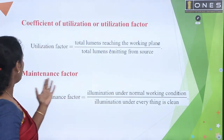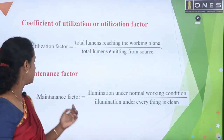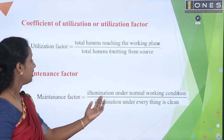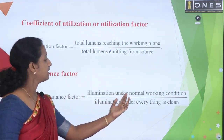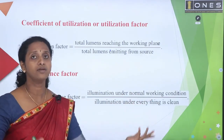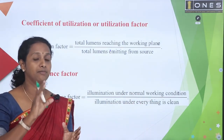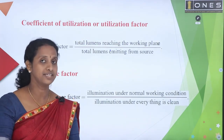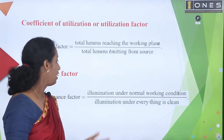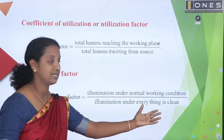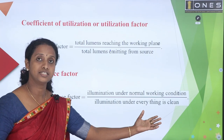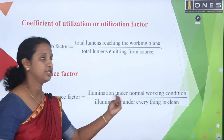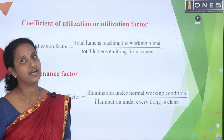Then, maintenance factor. What is the unit? Illumination under normal working condition — when things are not clean, there is no brightness. Illumination under a clean stage — there is good brightness. That ratio is the maintenance factor.